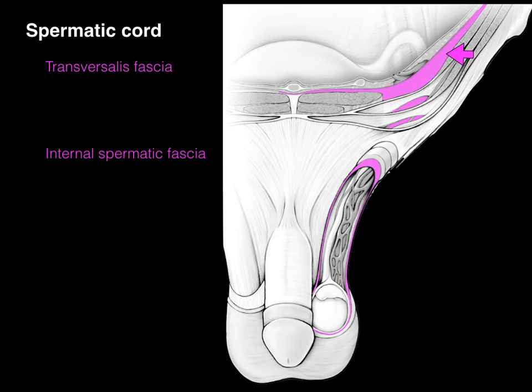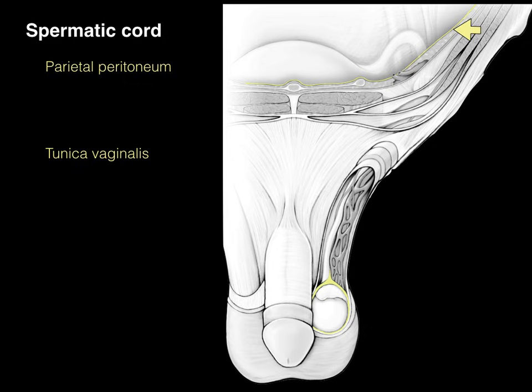Transversalis fascia, however, does contribute. It becomes the internal spermatic fascia that surrounds the connective tissue of the spermatic cord. The parietal peritoneum — that mesothelium and coelomic sac — lines the inside of the abdominal cavity. There's also the tunica vaginalis, which is the outpouching of the parietal peritoneum around the testis. Note they are not connected. The only time they're connected is with an indirect inguinal hernia, which increases the risk. In normal individuals, there is no connection between the parietal peritoneum and the tunica vaginalis.